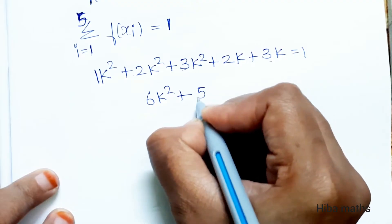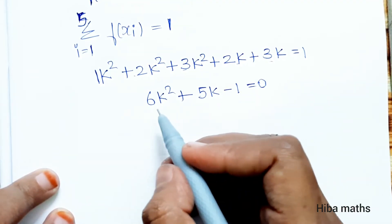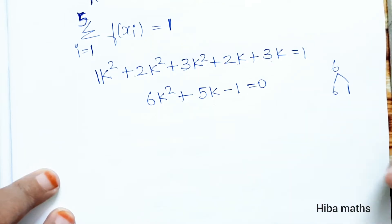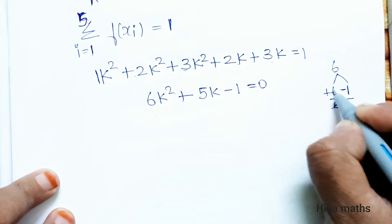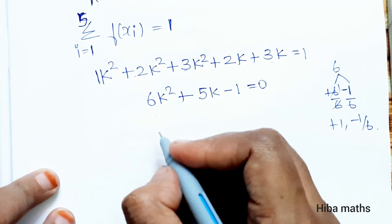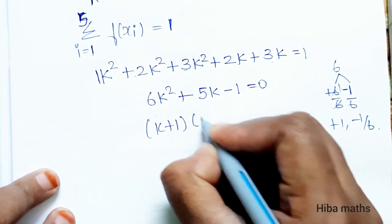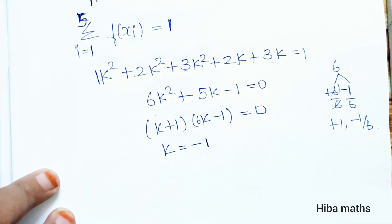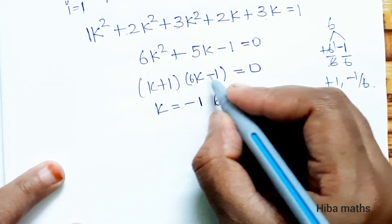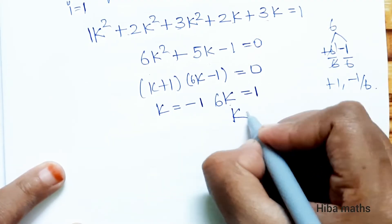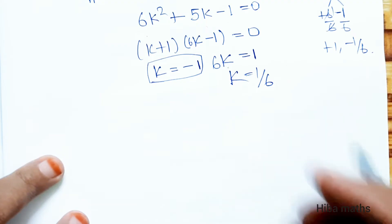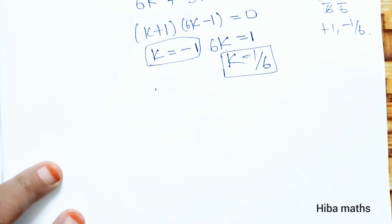Combining terms: 6k squared plus 5k plus 1 equals 1, which gives 6k squared plus 5k equals 0. Factoring: k times (6k plus 5) minus 1 equals 0. Solving gives k = 1/6 and k = -1. Since k must be non-negative, k = 1/6.